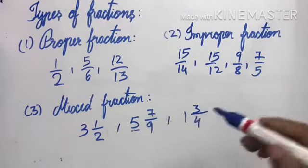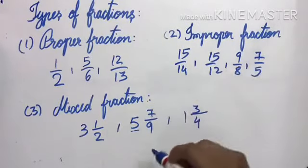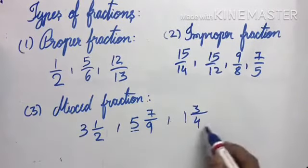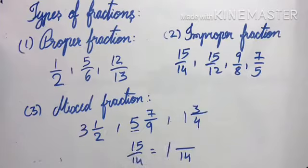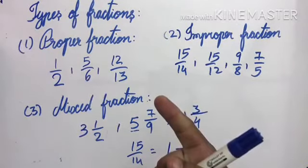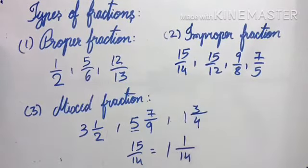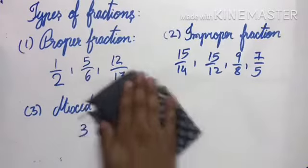Whenever we have an improper fraction, we can change it into a mixed fraction. For example, 15/14 — 14 goes into 15 once with remainder 1, giving 1 and 1/14. We can always convert improper fractions to mixed fractions and vice versa. Those are the types of fractions.